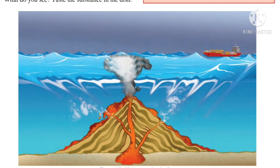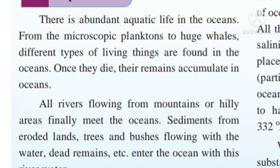Let us see how minerals and salts are formed in the oceans. Different types of living things are found abundantly in the ocean, from microscopic plankton to huge whales. Once they die, their remains accumulate in the oceans. Also, river water flowing from mountains into the ocean carries sediments from eroded lands, trees, bushes, and dead remains. These dead remains decompose, releasing various minerals and salts into the ocean water. Volcanic eruptions in the oceans also add minerals, ash, salts, and gases into the water, increasing the levels of salts and minerals in ocean water.